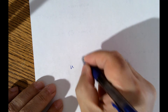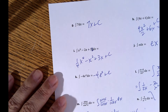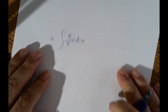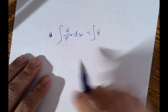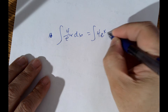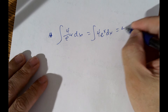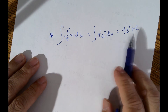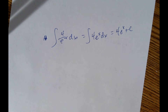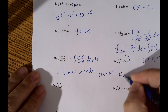Example n: the integral of 4 over e to the negative x dx. Do some algebra — a negative exponent in the denominator becomes a positive exponent in the numerator, so this is 4 e to the x dx. The integral is just 4 e to the x plus C. Remember, the derivative of e to the x is e to the x.